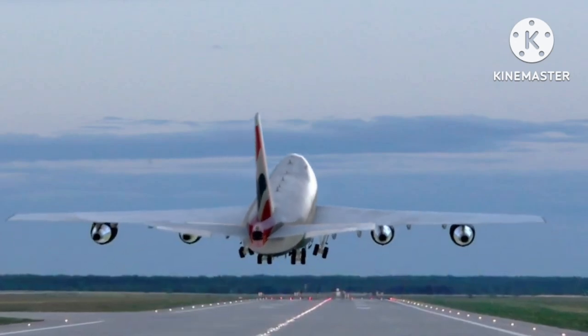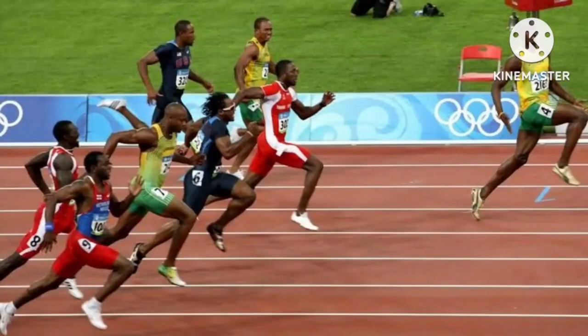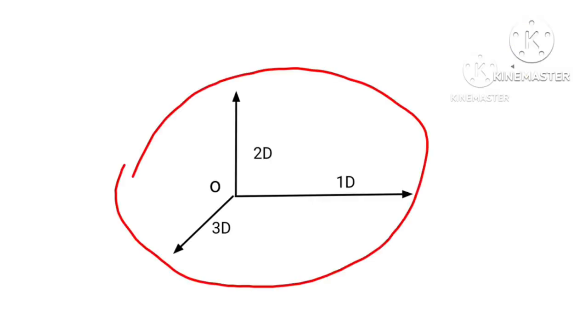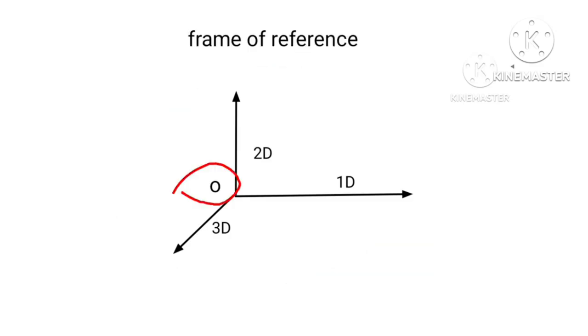A motion may be a straight line or a curvilinear motion. We can also say one, two or three dimensional motion. What is important is all are moving with respect to ground. This set of geometrical axes is called frame of reference, with fixed point O as point of reference.